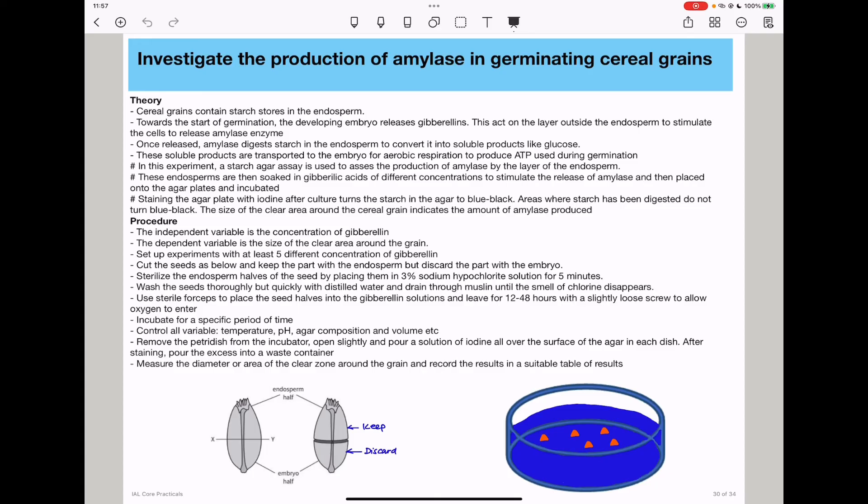The sample with the wider diameter had the greatest amount of digestion. Therefore, that concentration of gibberellic acid led to the release of the greatest amount of amylase and had the greatest digestion.